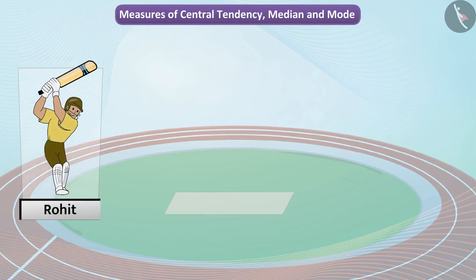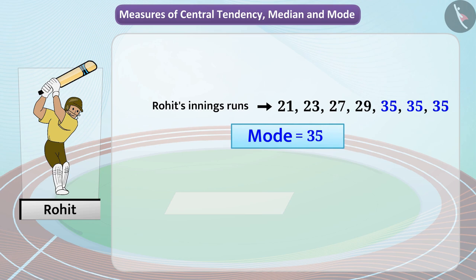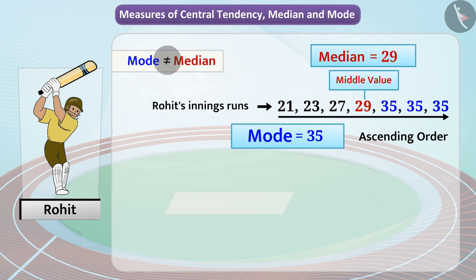Let us take another example to understand this. Listed here are the number of runs in some of Rohit's innings. We see that 35 is observed three times in the range, so we can call it the mode of the range. However, on arranging the observations in ascending order, the middle value is 29 — that is, the median is 29. Thus, the mode and the median are not equal here.